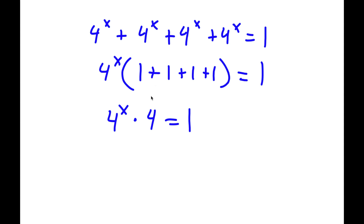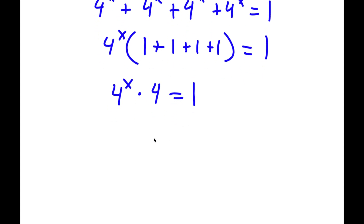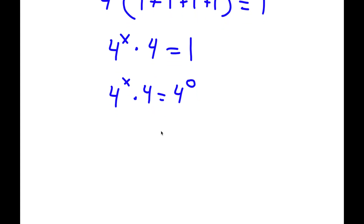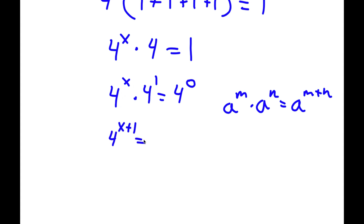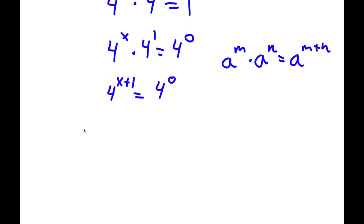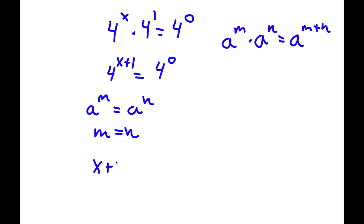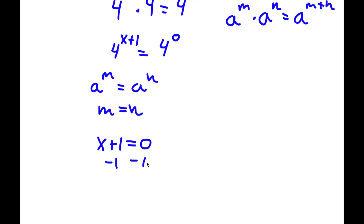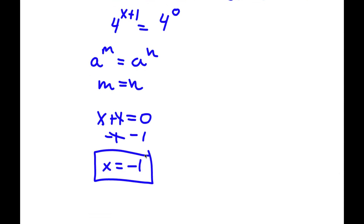Now 1 is the same thing as 4 to the power of 0. So I have 4 to the power of x times 4 equals 4 to the power of 0. Now 4 is the same as 4 to the power of 1, and a to the power of m times a to the power of n equals a to the power of m plus n. So 4 to the power of x times 4 to the power of 1 equals 4 to the power of x plus 1. And this equals 4 to the power of 0. If a to the power of m equals a to the power of n, then m equals n. So x plus 1 equals 0, and subtracting 1 from both sides gives x equals negative 1.